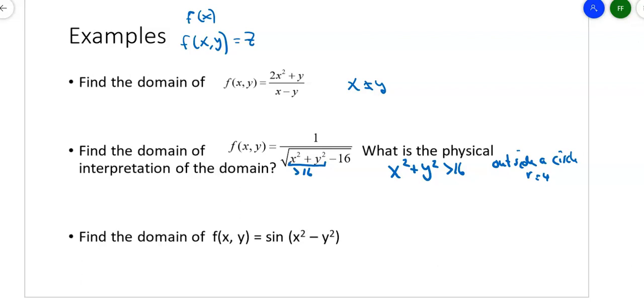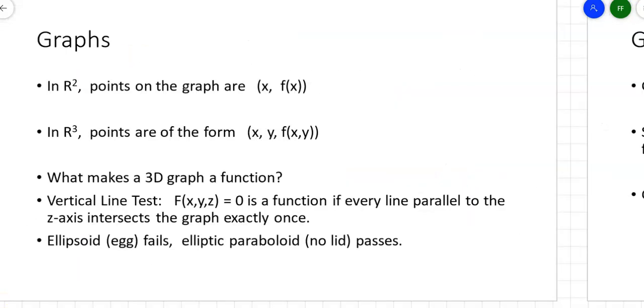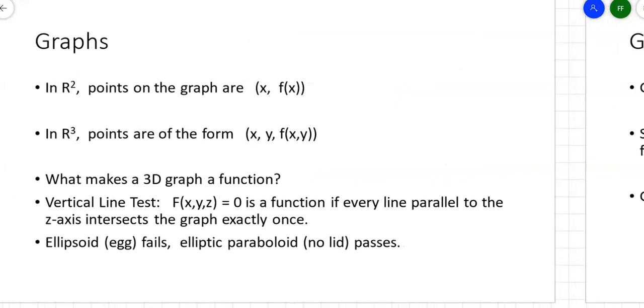For this one at the bottom, sine of x squared minus y squared. I can take sines of zero, the sine of zero is zero. I can take sines of negative numbers, it means going backwards along the unit circle. I can take sines of positive numbers. So any possible value of x and y will work as the domain of that function. Sometimes you really do get all real numbers, except this time it's both the x's and y's.